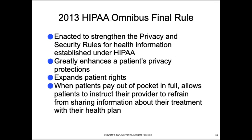The 2013 HIPAA Omnibus Final Rule was enacted to strengthen the privacy and security rules for health information established under HIPAA. It greatly enhances a patient's privacy protections, expands patients' rights, and when patients pay out of pocket in full, it allows patients to instruct their provider to refrain from sharing information about their treatment with their health plan. It also requires that the notice of privacy practices forms inform patients that they will be notified if their PHI is subject to a breach.